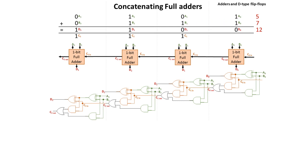1 and 1 is 0, carry the 1. 0, 1, and 1 is 0, carry the 1. 1, 1, and 1 is 1, carry the 1. 0, 0, and 1 is 1. So 5 plus 7 is 12.